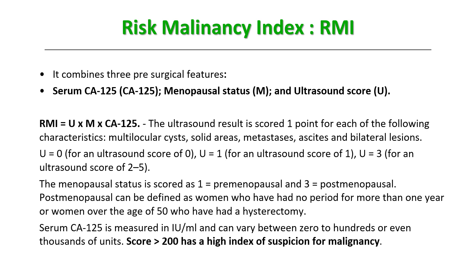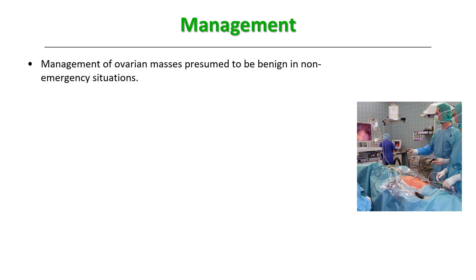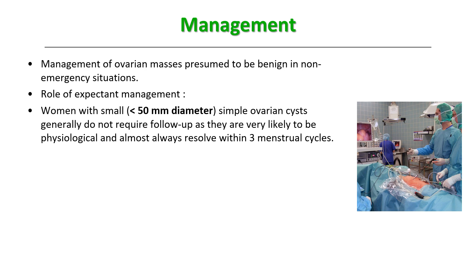Now for management of ovarian masses presumed to be benign in non-emergency situations. We already know the emergency ones — those presenting with acute abdomen where torsion, hemorrhage, or rupture is suspected. For non-emergency benign masses, there is a role for expectant management. Women with small simple ovarian cysts less than 50 mm (5 cm) do not require follow-up, as they are very likely physiological — such as follicular cysts, corpus luteal cysts, or simple hemorrhagic cysts — and almost always resolve within three menstrual cycles.